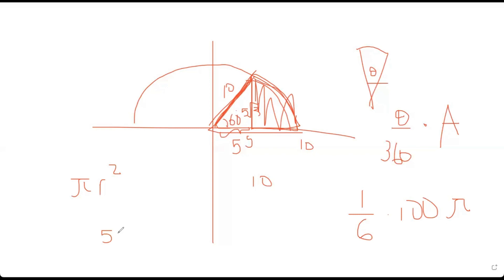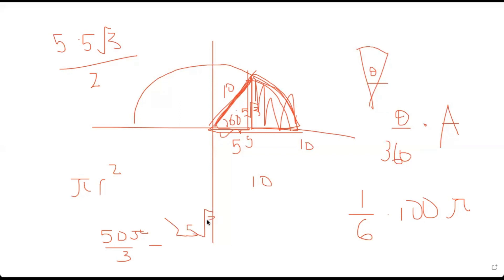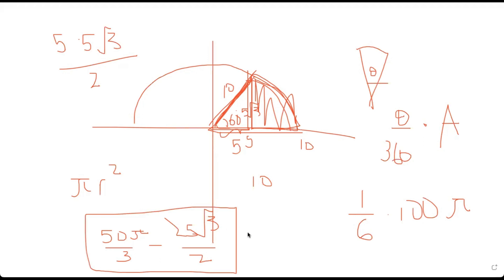You get 50π/3 minus the area of the right triangle. The triangle has base 5 and height 5√3, so its area is (1/2)(5)(5√3) = 25√3/2. The final answer is 50π/3 − 25√3/2 units squared. This isn't the neatest answer since the numbers were made up on the spot, but that's your answer for this problem. Remember units squared for area.